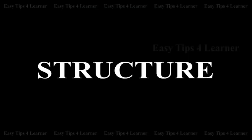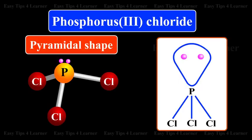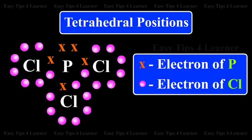Structure: PCL3 molecule has a pyramidal shape which arises from SP3 hybridization of phosphorus atom. One of the tetrahedral positions is occupied by a lone pair of electrons.